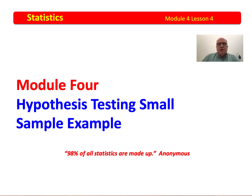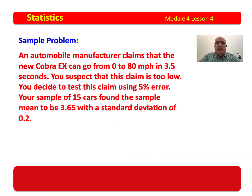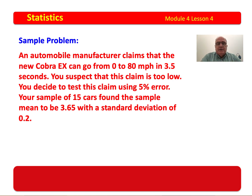To help you through this, I'm going to work a small problem using a small sample. We will have the exact same problem as before, but in our case the number is going to be less than 30 — 30 generally being the rule of thumb value for a large sample. If it's 30 or above, it's a large sample; if it's less than 30, then it's a small sample.